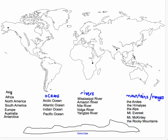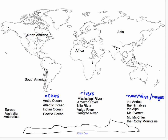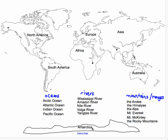So if you remember the song, we've got Asia and Africa. It starts off like this: we've got Asia and Africa in our hands. We've got North America and South America in our hands. We've got Europe and Australia in our hands, and it's called Antarctica. So we've placed the seven continents.